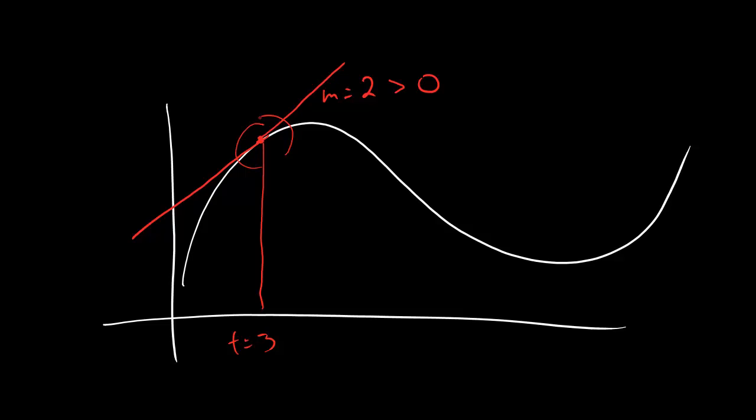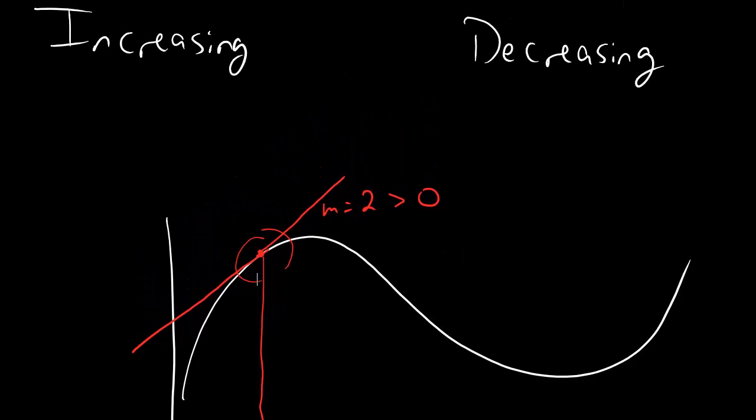Because the line does the same thing that the function does, at least close by that point. So because the slope is positive, the line is increasing and therefore the function is also increasing. And here's the gist of that. The function is increasing if the derivative is positive.